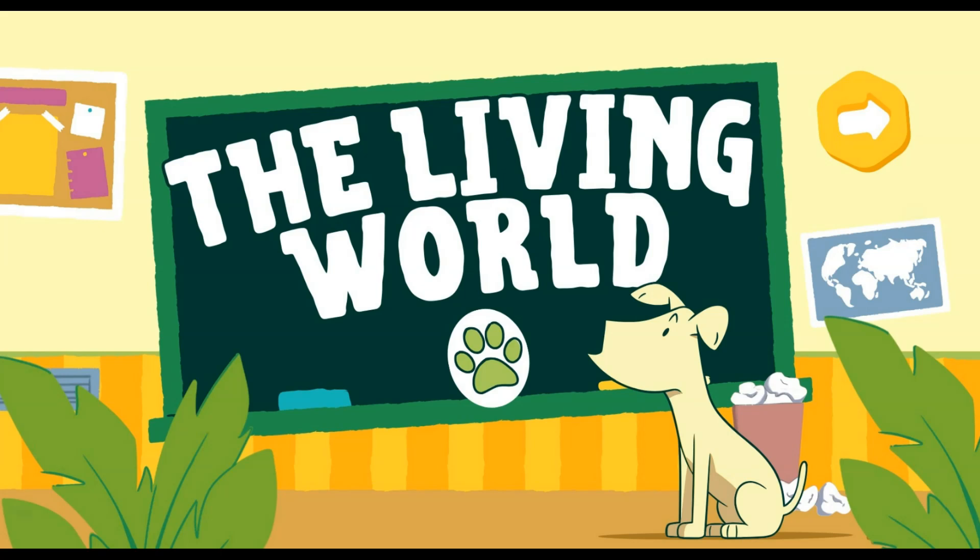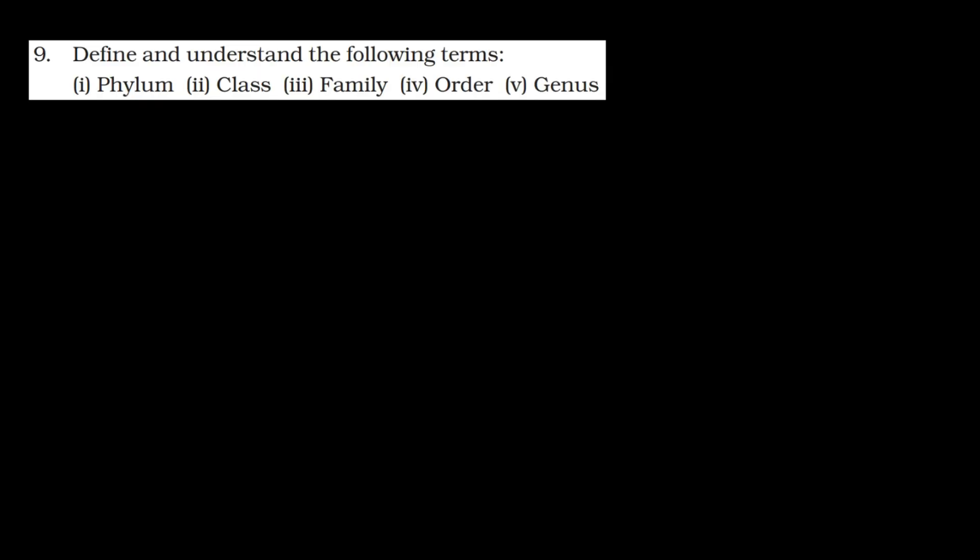Hello everyone. We are discussing NCERT questions of the chapter The Living World and in today's session we are going to discuss question number 9. The question is: define and understand the following terms — phylum, class, family, order, and genus.